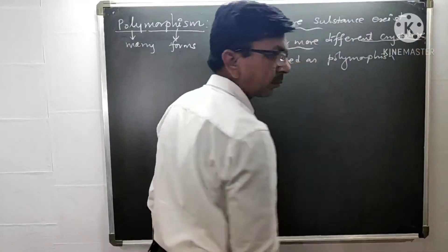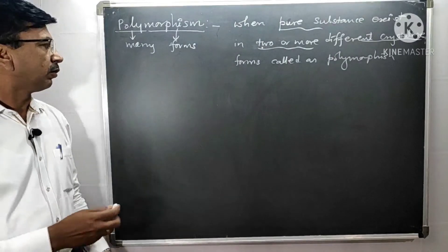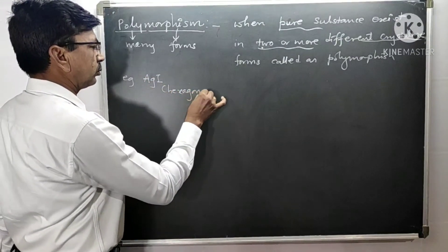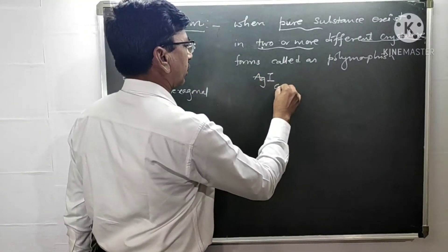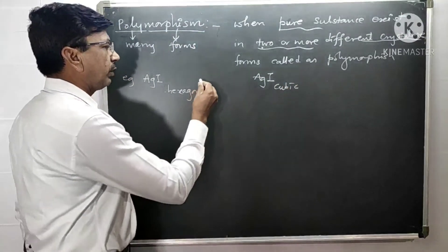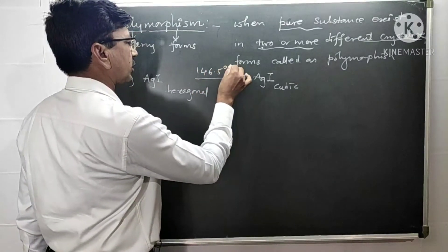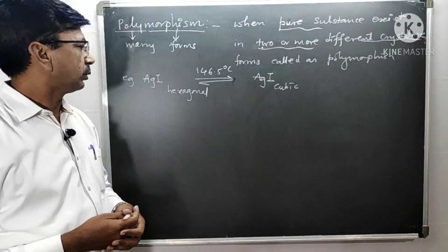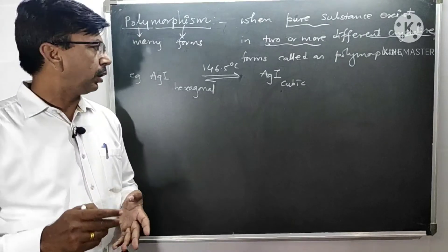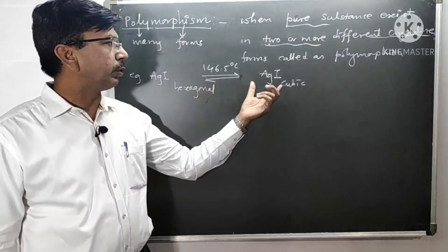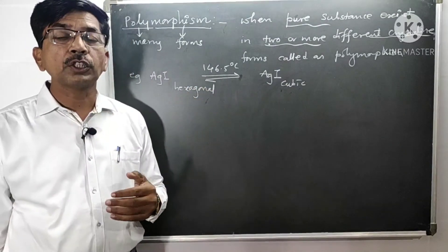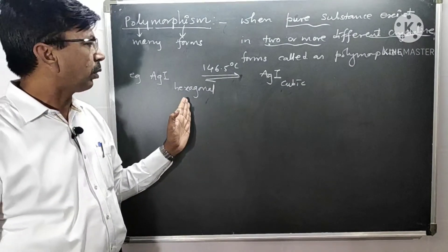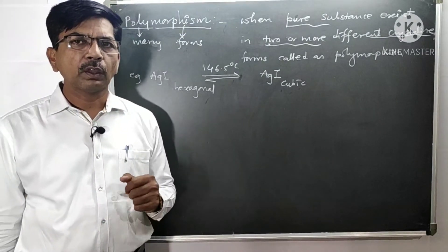When a pure substance exists in two or more different crystalline forms, we call it polymorphism. For example, silver iodide exists in two forms: a hexagonal form and a cubic form. When we heat the hexagonal form at 146.5 degrees Celsius, it gets converted into the cubic form. The temperature remains constant until all the hexagonal silver iodide is converted into the cubic form. This is called the transition temperature — the characteristic temperature at which phase transition of the crystalline substance takes place from hexagonal to cubic form.